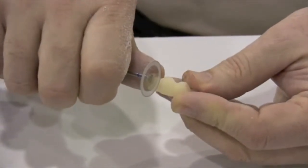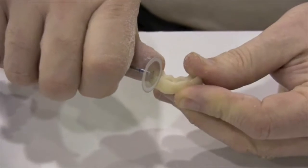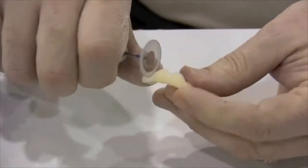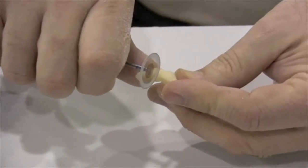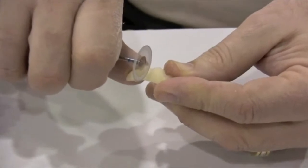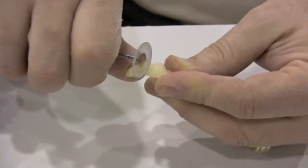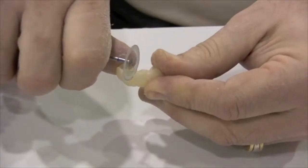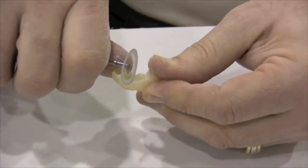Now the final restorations are all going to be single units, but for convenience, most of the time what we will do is splint these units together in the provisional phase.